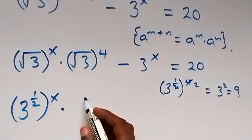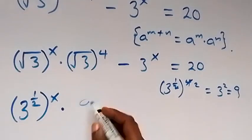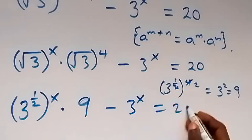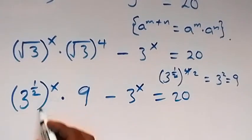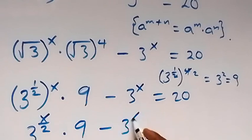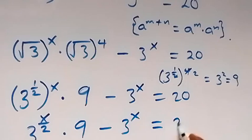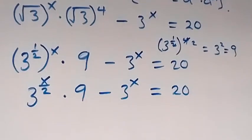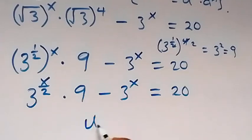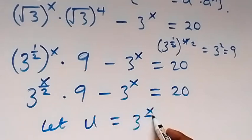So here we can say this is 9 on this side, then minus 3 raised to power x, equals 20. Also, the powers multiply and we have 3 raised to power x over 2, times 9, minus 3 raised to power x, equals 20. From here, we have 3 raised to power x, so let's let u represent 3 raised to power x over 2.